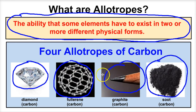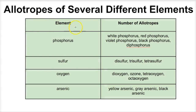The four allotropes of carbon are diamond, fullerene, graphite, and soot. Now let's take a look at a table showing allotropes for different elements. Carbon is not the only element to form multiple allotropes — there are in fact several of them shown here.